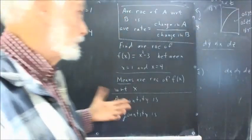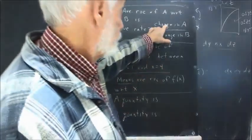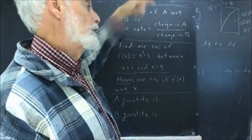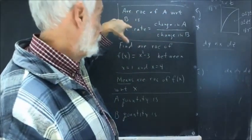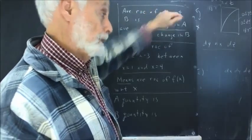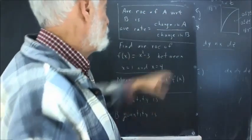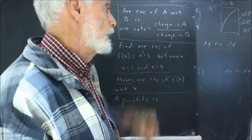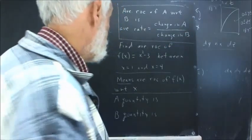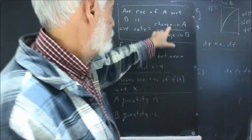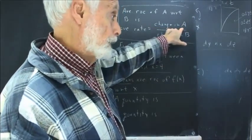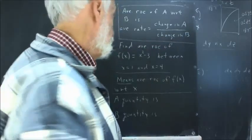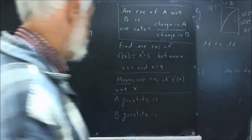Students are constantly forgetting this essential word — 'change in.' It's part of the definition; every word in this definition is essential. It means you have to have two values of the A quantity and two values of the B quantity so that you can subtract to find the change in A and subtract to find the change in B.